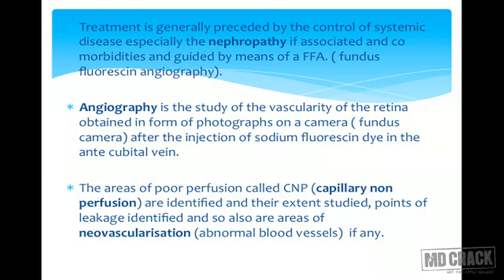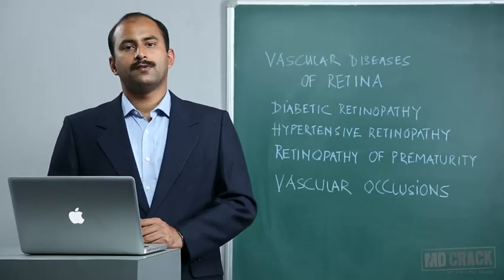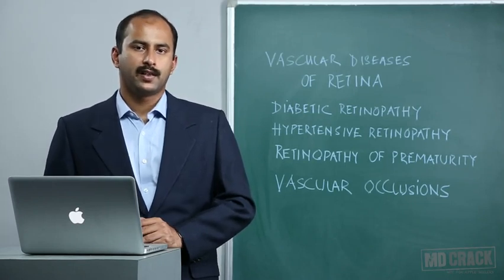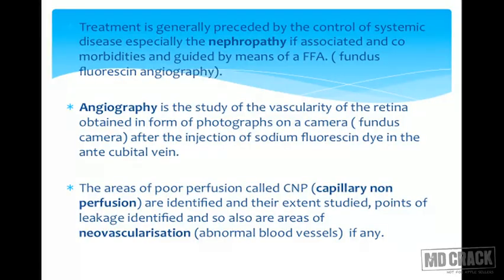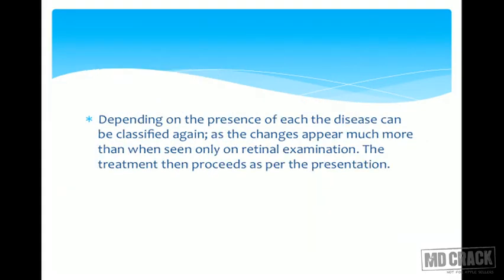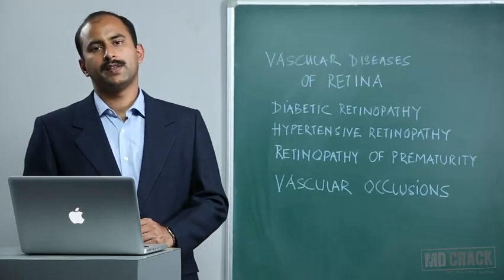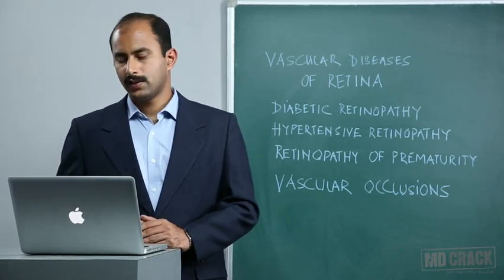Treatment is generally preceded by control of systemic disease, especially nephropathy, and is guided by fundus angiography. Angiography is the study of retinal vascularity obtained from photographs on a fundus camera after injection of contrast into the antecubital vein. Every stage of the angiogram provides information for proper diagnosis and treatment planning. The most important findings are areas of capillary non-perfusion and neovascularization, detectable better than by clinical examination. Leakage areas are identified, and in some cases the clinical disease needs reclassification based on angiography findings.